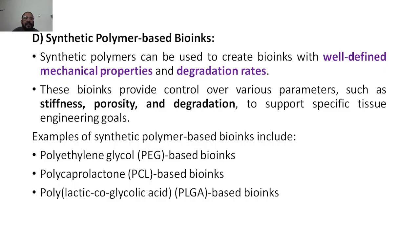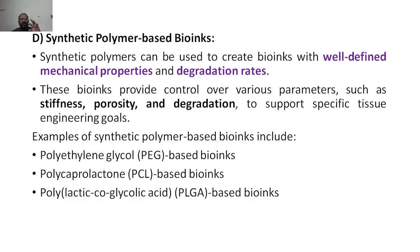The next material is synthetic polymer-based bioinks. In the name itself — synthetic polymers can be used to create bioinks with well-defined mechanical properties and degradation rates. The major two properties are mechanical properties and degradation rates, which can be manipulated. These provide control over various parameters such as stiffness, porosity, and degradation, to support specific tissue engineering goals.